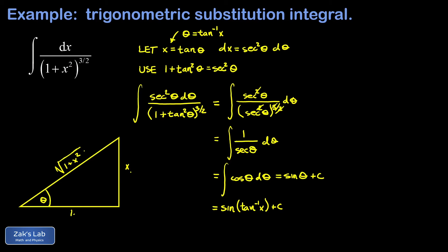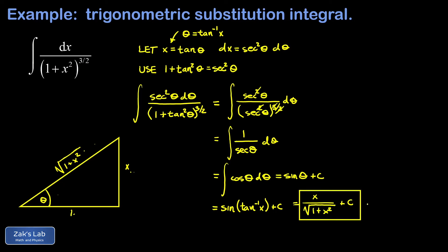Now that the triangle is solved, we can compute the sine of the angle whose tangent is x. The sine of this angle is the opposite over the hypotenuse, so we obtain x over the square root of 1 plus x squared, plus C. And we're done.